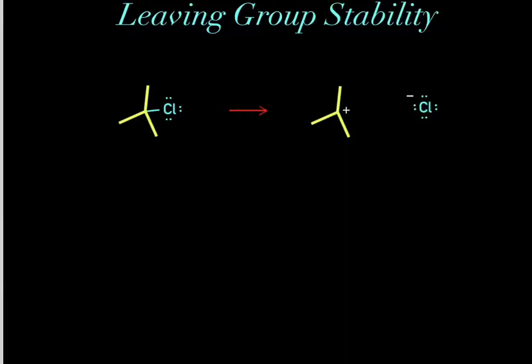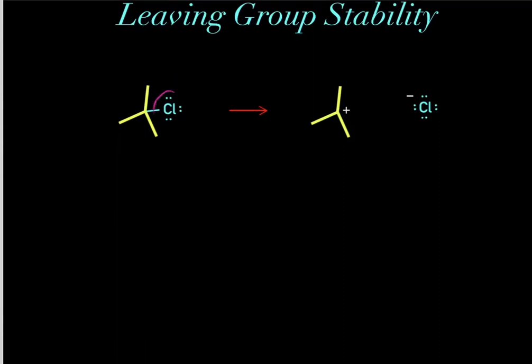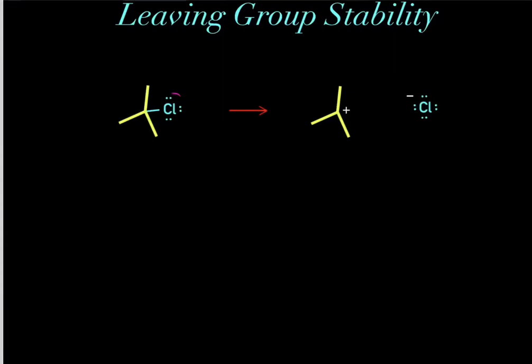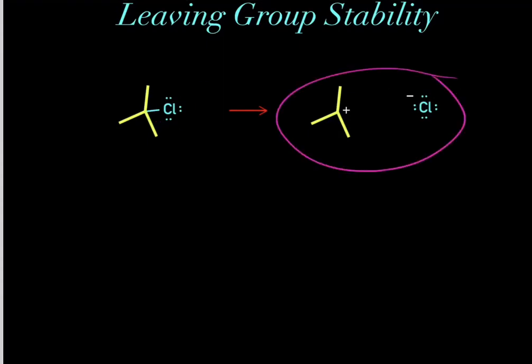In this video, I want to talk about leaving group stability. What are leaving groups? If we have this compound, this chlorine can act as a leaving group. When it acts as a leaving group, we break this bond, and these electrons fall on this chlorine, forming this chloride leaving group. That's why it's called a leaving group — because it leaves. And now we're left with these two products.